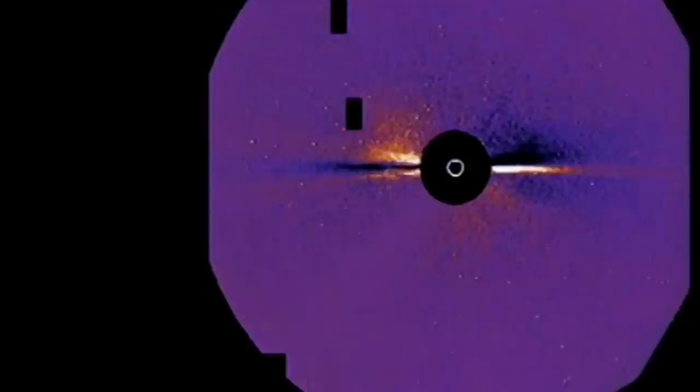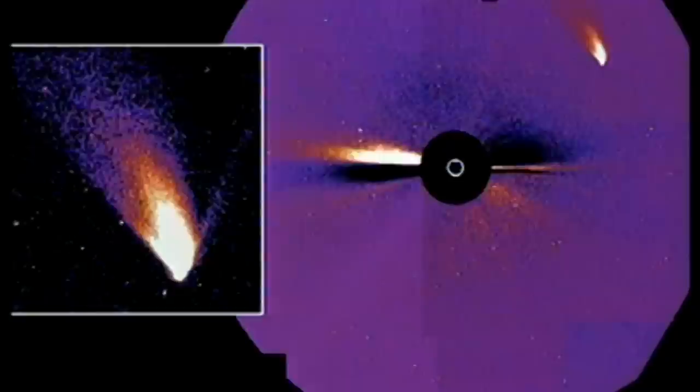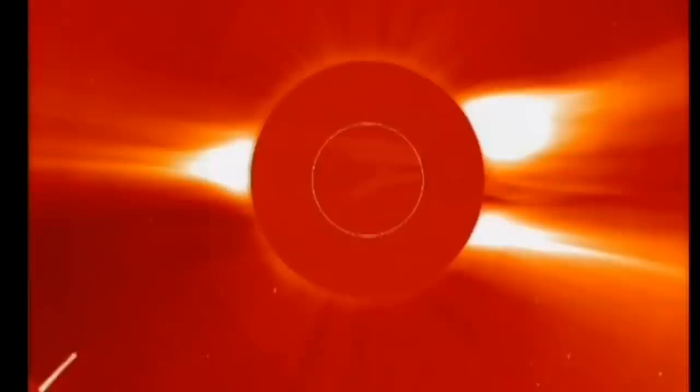Cachons le disque solaire et regardons en accéléré une comète contourner le Soleil. Celle-ci se perd dans le Soleil.